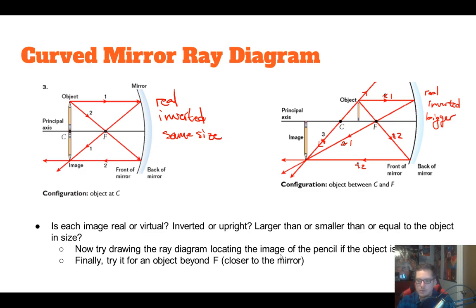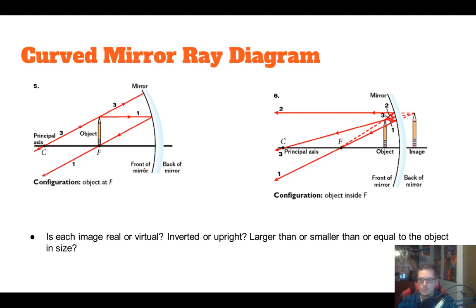Try drawing the ray diagram with the object placed at F. Ray one goes parallel and then bounces through F. Ray two can't exist because the ray would go straight down and wouldn't hit the mirror. Ray three goes up to the mirror and comes back toward C. Notice that when the object is right at F, these two remaining rays are parallel to one another — because they're parallel, they'll never intersect and will never form an image.